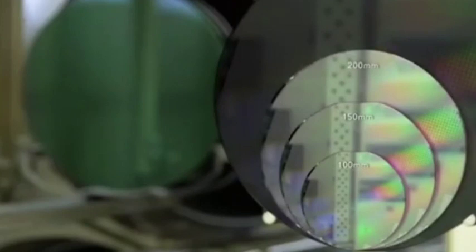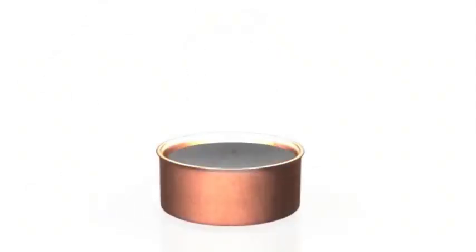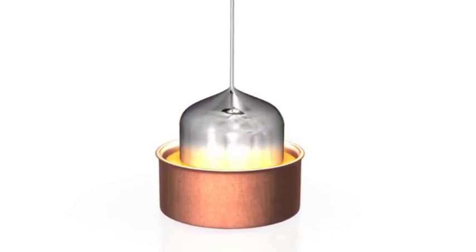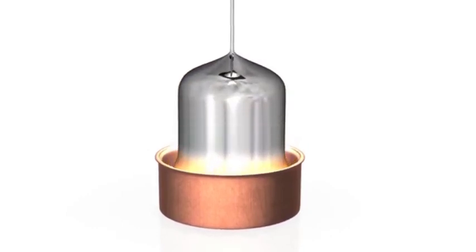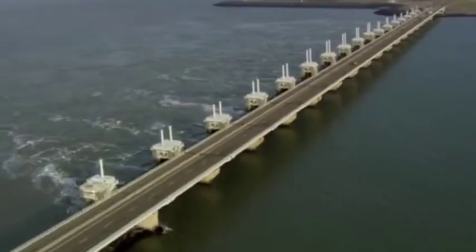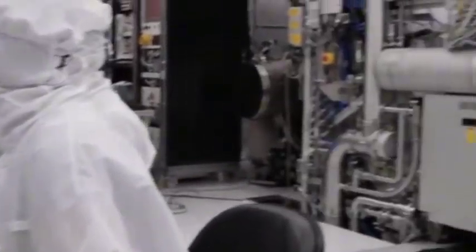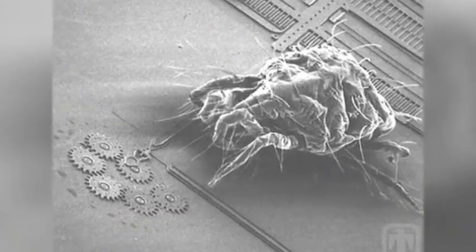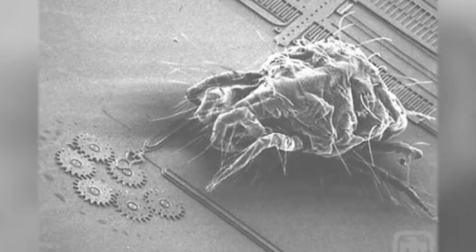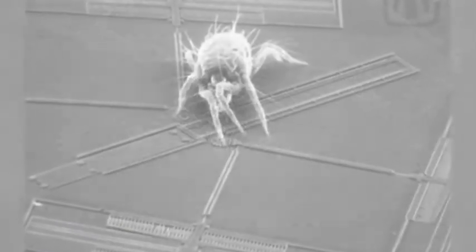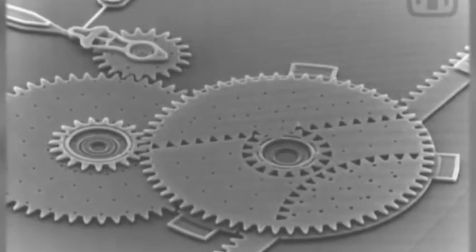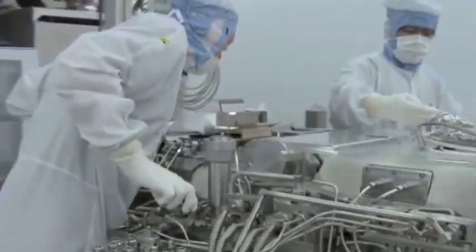This is enough to show that the chip blockade implemented by the United States against China has been half ineffective. ASML has also used practical actions to tell the United States, in the face of interests, so-called allies are nothing but a joke. In fact, as the chip dispute between China and the United States continues to escalate, the attitude of various semiconductor companies towards China has quietly changed since the beginning of this year.